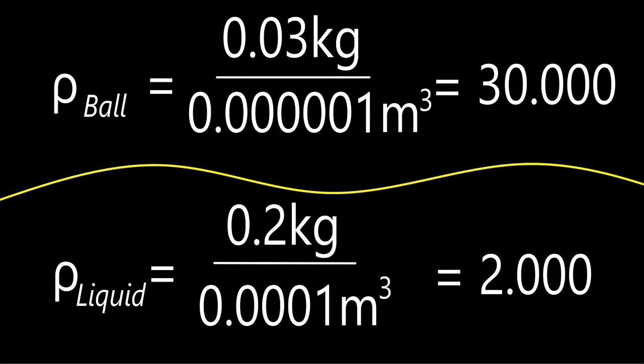The ball, in our scenario, weighs 30 grams or 0.03 kilograms. We're going to divide that by 0.0000001 cubic meters and get a density of 30,000 kilograms per cubic meter.